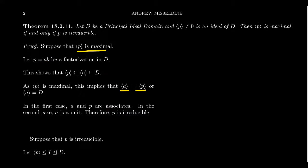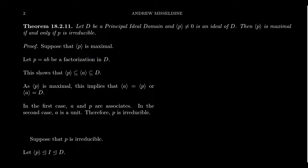In the first case, two principal ideals are equal if and only if their generators are associates. So if P and A are associates, that implies B is a unit. In the second case, if a principal ideal equals the whole ring (which contains unity), then A must be a unit. So in either case, either A is a unit or B is a unit. Since this was an arbitrary factorization of P, this shows P is irreducible. Maximal principal ideals always coincide with irreducible elements.